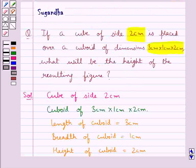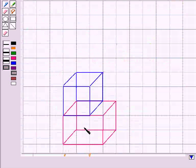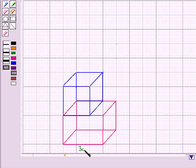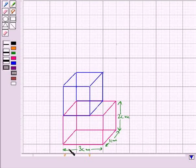The cube is placed over the cuboid. So this would be the resulting figure where we have a cuboid of dimensions 3 cm × 1 cm × 2 cm. That is, 2 cm is the height of the cuboid, 1 cm is the breadth, and 3 cm is the length of the cuboid.